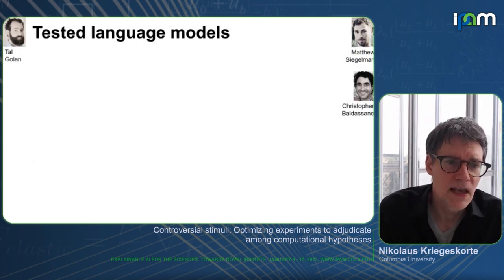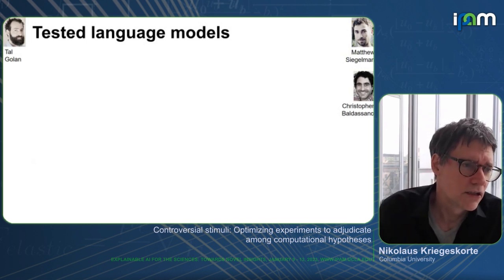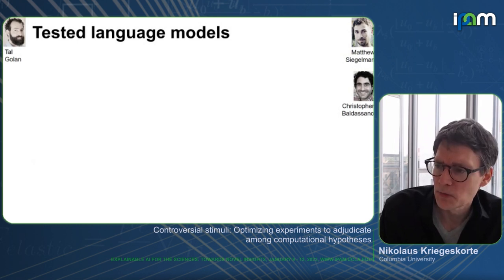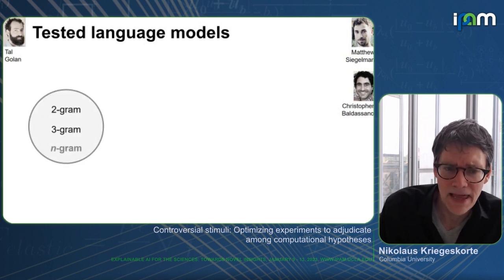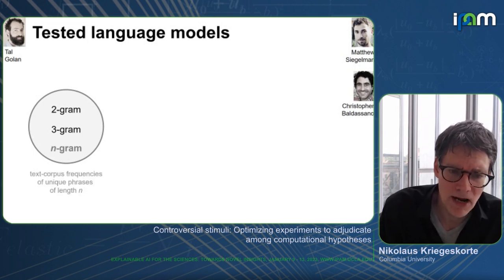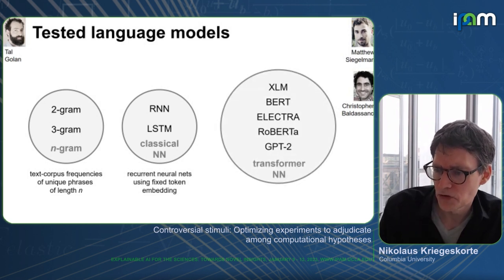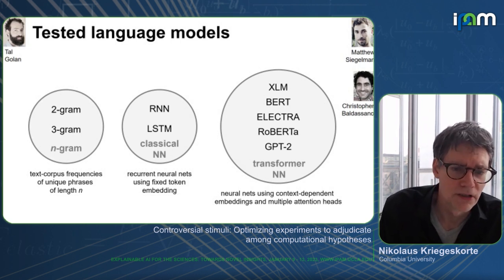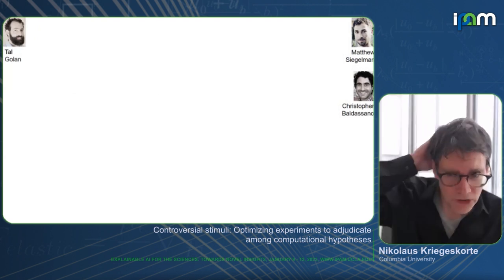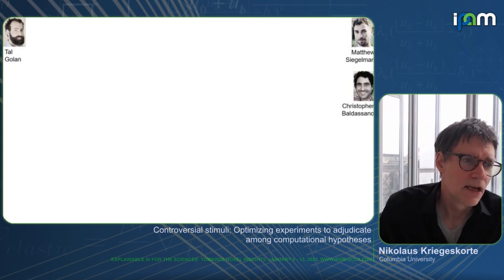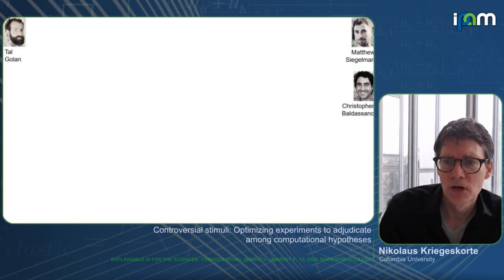I'll now switch gears and give an example of the controversial stimuli approach in a totally different domain: language. In collaboration with Chris Baldassano's lab and PhD student Matthew Siegelman, we tested a range of language models including naive bigram and trigram models based on text corpus frequencies, classical recurrent neural network models and LSTM models, as well as modern transformer models using context-dependent embeddings and multiple attention heads. These models all assign probabilities to sentences.